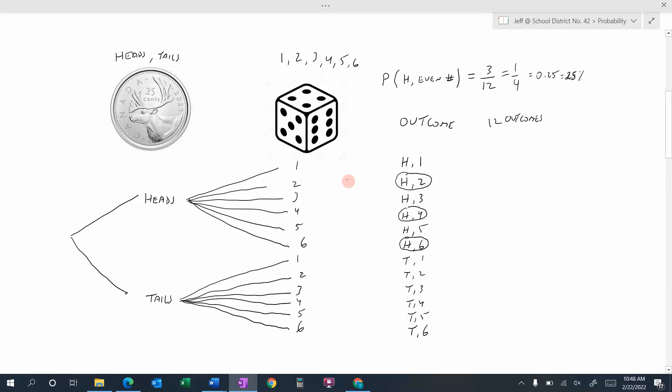So in this video, we're going to take a look at how we can determine the total number of outcomes when we have two or more different independent events.